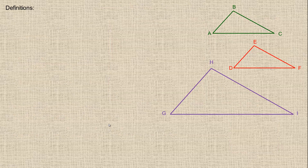Now for some more specific definitions, we're going to talk about triangles specifically on this page and the next one. We've got these three triangles: ABC, DEF, and GHI. ABC and DEF are exactly the same size. GHI is bigger than ABC or DEF. In fact, I tried to draw it so that the sides in GHI are double the sides in ABC — it's pretty close, and I will refer to that in part of this example.